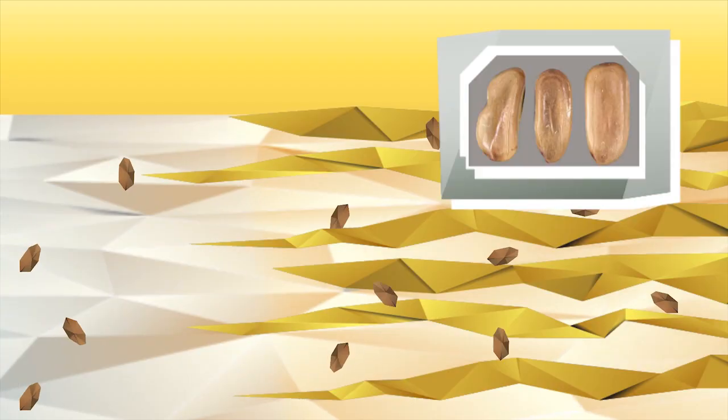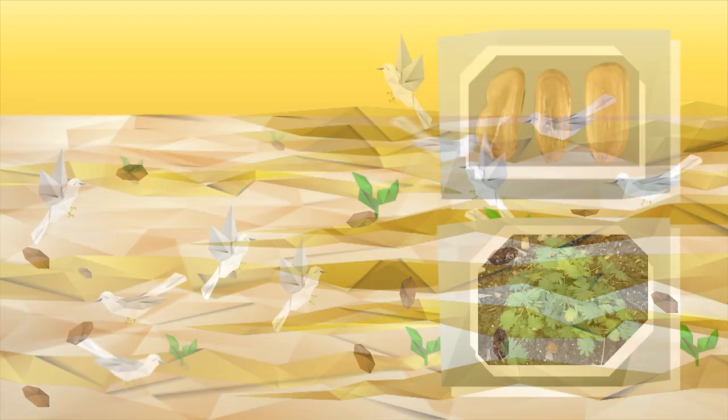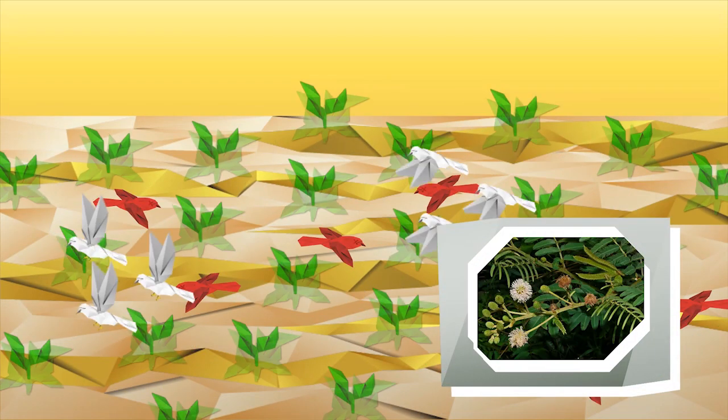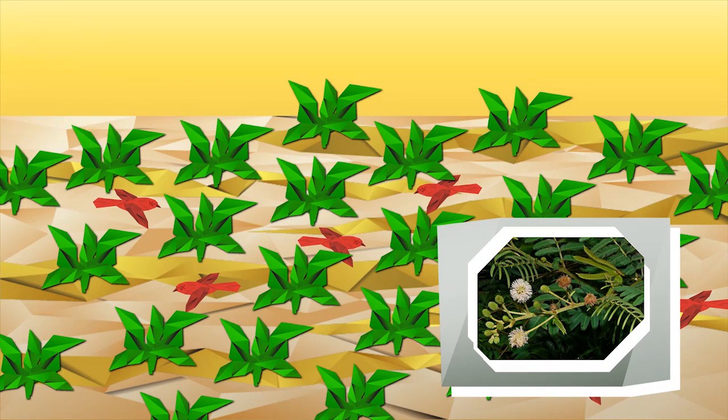Giant mimosa, a thorny shrub with buoyant seeds that grow abundantly in mudflats, can drive away migratory birds feeding and nesting in these areas.